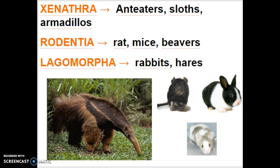Class Rodentia are the rodents — rats, mice, and beavers. Their teeth grow considerably quickly throughout their whole lives, which is why we have that Rodentia title. Class Legomorpha: morph refers to form, and lego refers to long — meaning long form in the ears — so these are the rabbits and the hares.